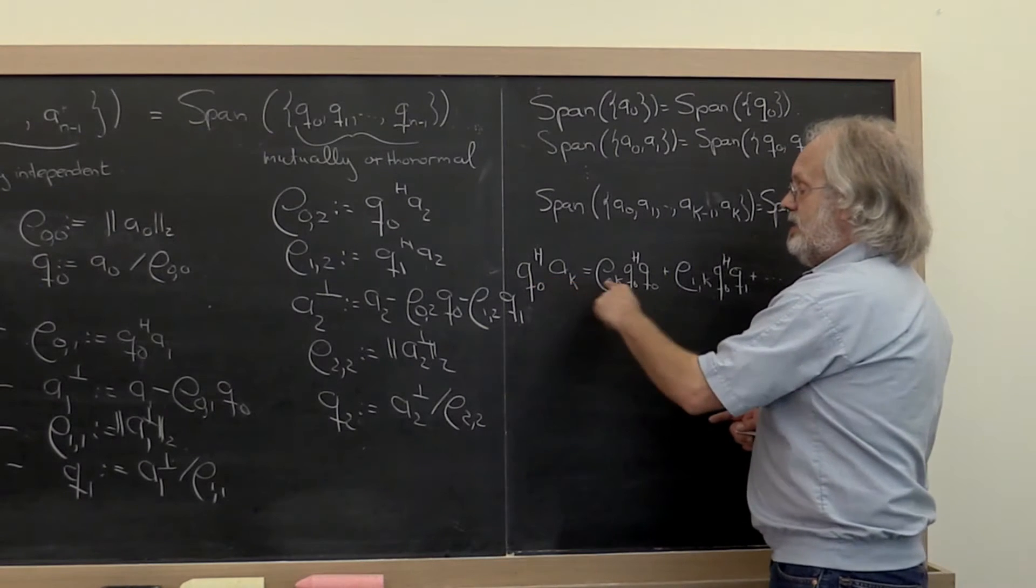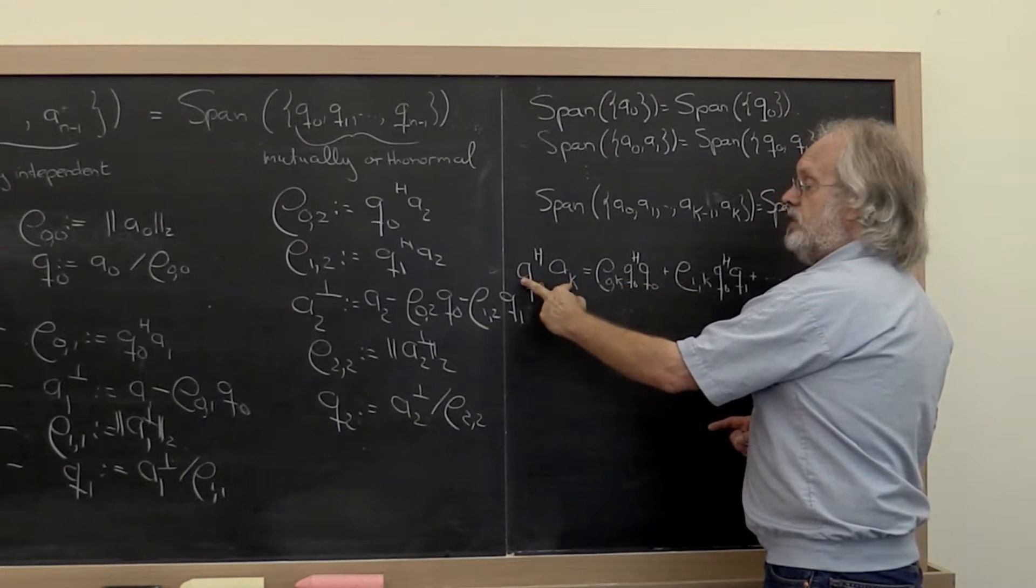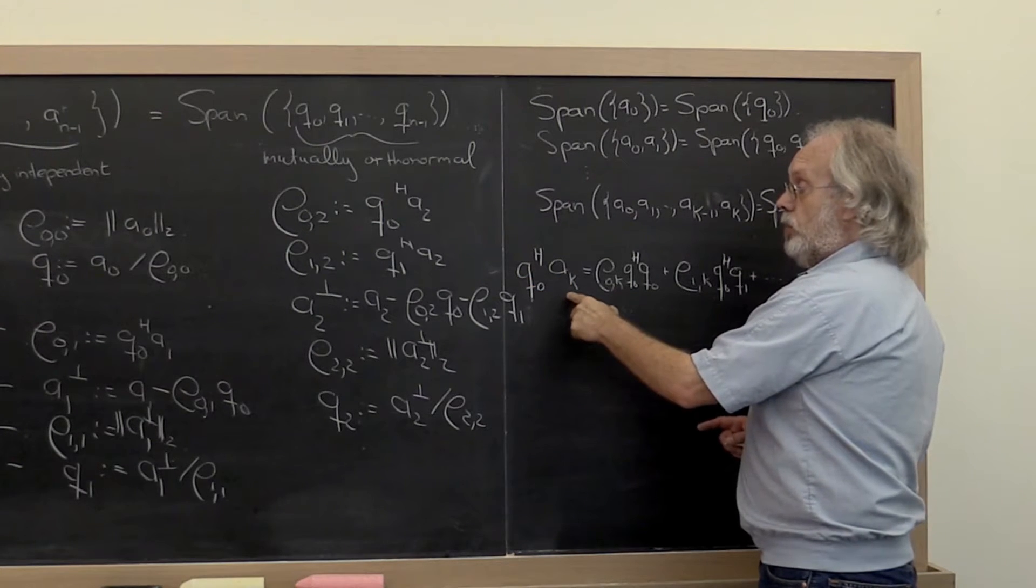So what you get is that rho 0k can be computed by taking the dot product of Q0, which we already know, with the current vector Ak.